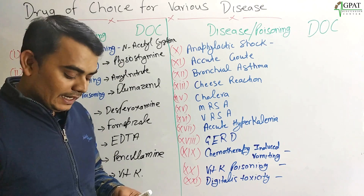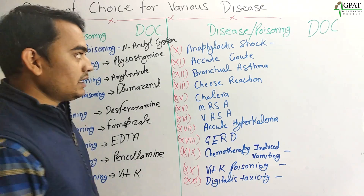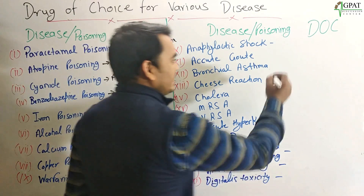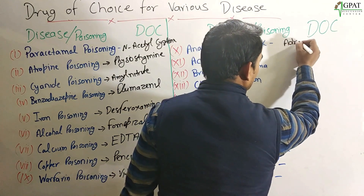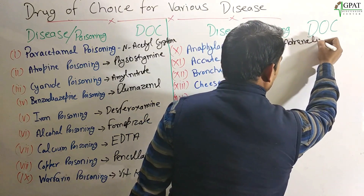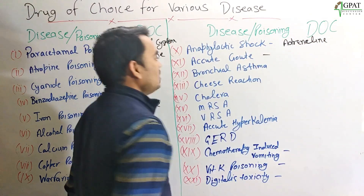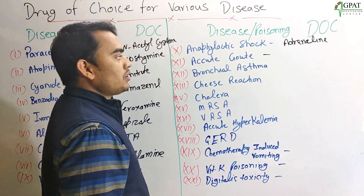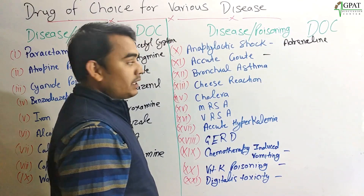Next: Warfarin poisoning. For warfarin poisoning, Vitamin K is the drug of choice. Next: anaphylactic shock. For anaphylactic shock, Adrenaline is the drug of choice.